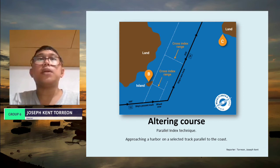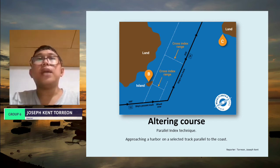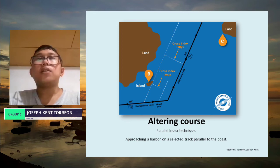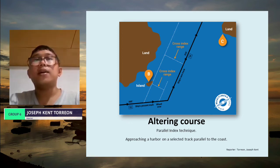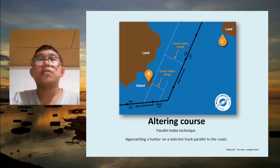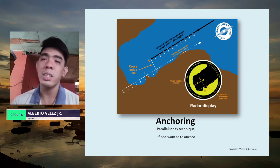On the chart, draw lines parallel to the new course through the edge of B and through the plotted wheel-over position, allowing for the vessel's turning radius. The first line gives the cross index range for commencing the turn; the second gives the new track when the turn is completed. Plot both parallel index lines on the PPI cursor at the scale to be used, and rotate the cursor to the intended new track. When the echo of B cuts the furthest line, put the wheel over and commence the turn; the echo of B will follow the dotted track and eventually coincide with the nearest line — the new track.